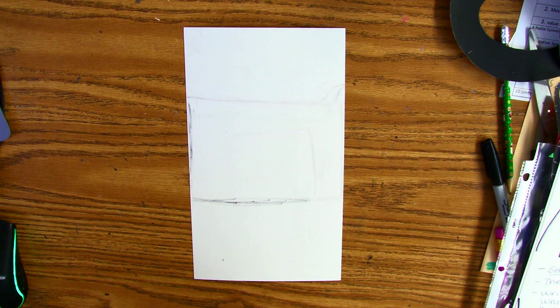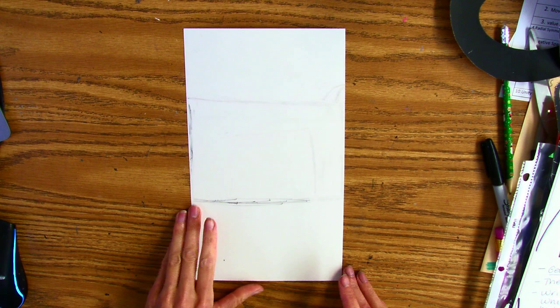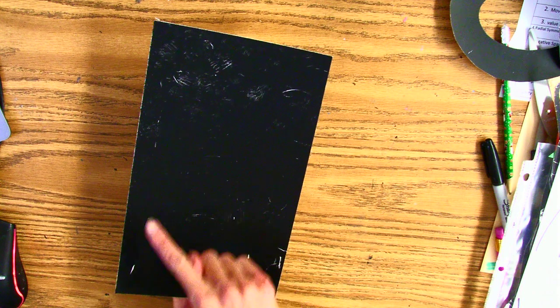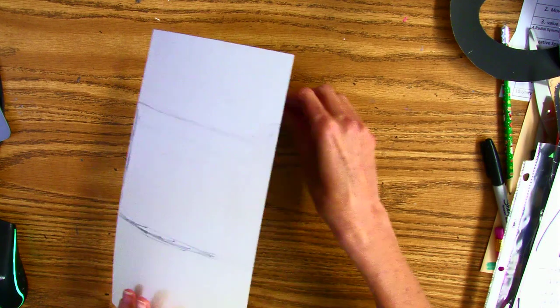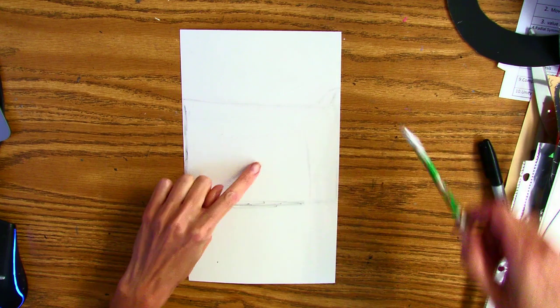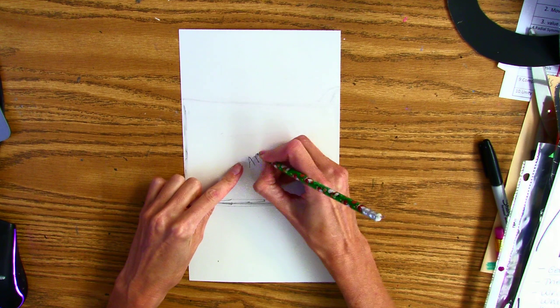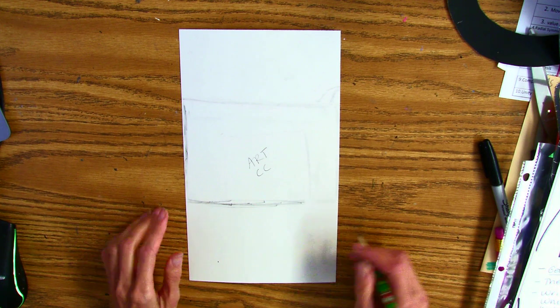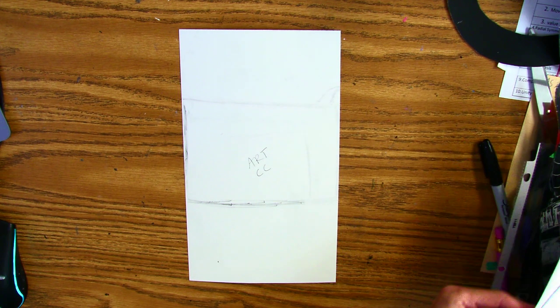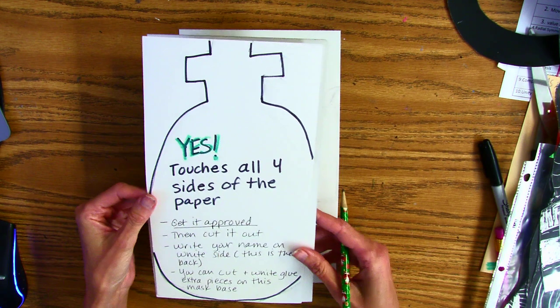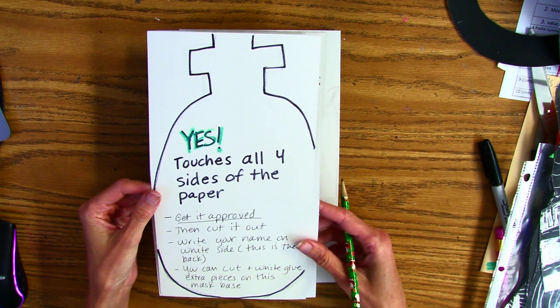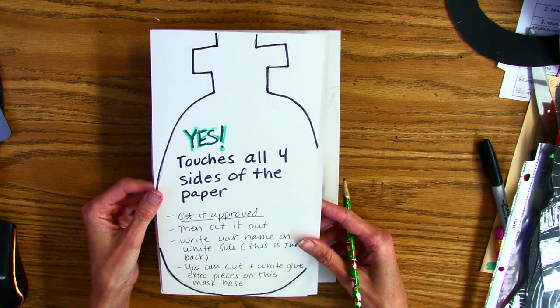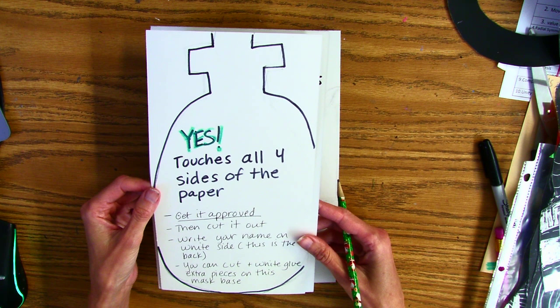Alright, so when you get your scratch board today there's two sides. Remember, one is the front that you use the scratch tool on, and one is the back. You're going to start on the back, find the middle, write your name and your class code. Then you have to draw just the shape of your mask. Yes, you have to touch all four sides of the paper. Then get it approved, then cut it out.